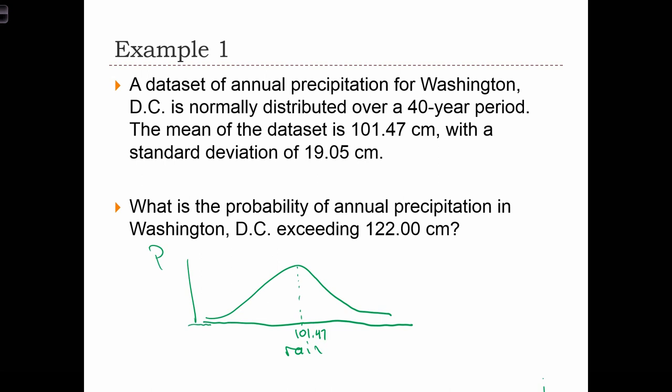We've been asked to find the probability of rain exceeding 122 centimeters. 122 centimeters is somewhere over here. We want to know the probability of the rain, which is the random variable that we're interested in, being more than 122 centimeters. So we're looking for the area to the right of this location, to the right of 122.